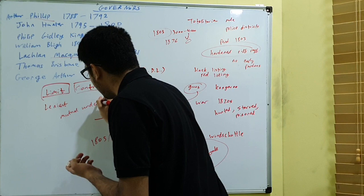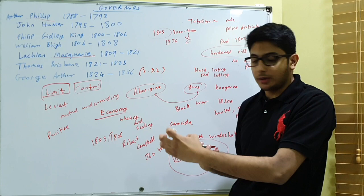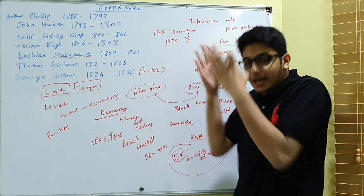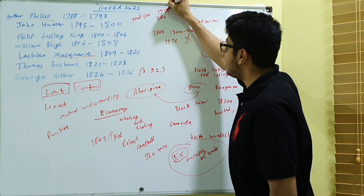Now don't get me wrong, they still killed some aborigines, but it was more so punitive, in terms of punishing them or retaliation, rather than directly going in and actively killing off the population. We also had, of course, the smallpox epidemic in 1789, which killed off 50% of the coastal aborigine population.